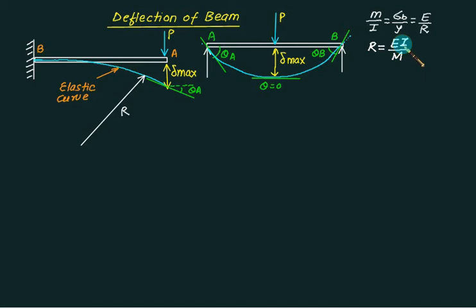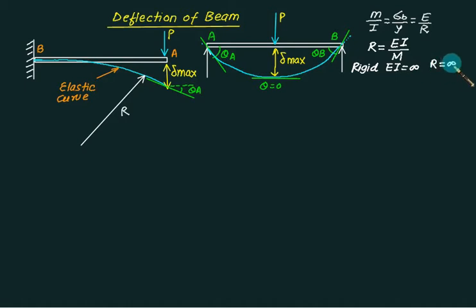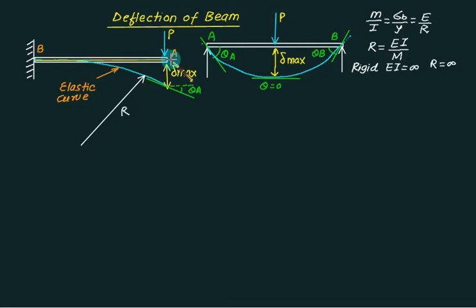If your value of E and I is very high, then whatever the value of M may be, R is very large — meaning deflection will be lower. Lower deflection means better condition and greater safety. If the beam is rigid, the value of EI is taken as infinity. For a rigid beam, EI → ∞, R → ∞, meaning the beam will lie horizontal and will not deflect.